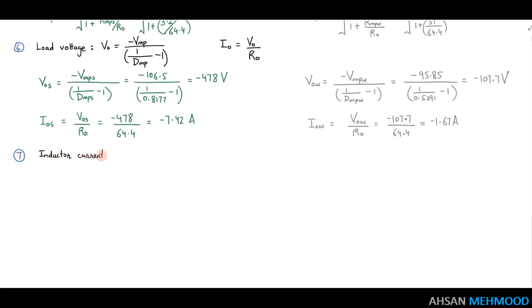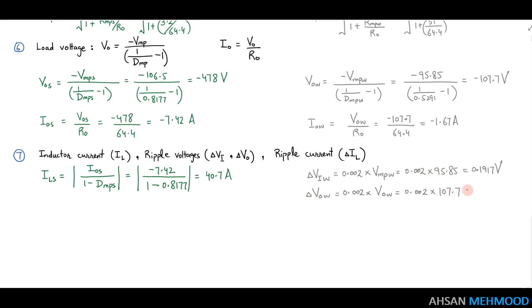The values of inductor current, ripple voltages and ripple current are determined in the seventh step as follows. I L S is 40.7A, delta V I W is 0.1917V, delta V node W is 0.2154V, ILW is 3.55A and delta ILW is 1.42A.